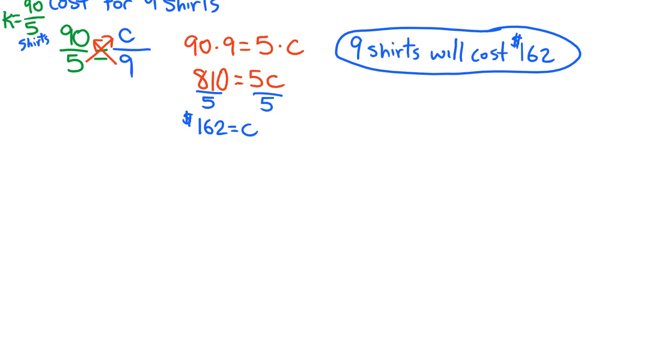So let's use this same example. We're going to start by finding k, which is our constant. So we have y equals kx. Again, let's let the cost be y, and let's let x be the number of shirts. So we know that we paid $90 for 5 shirts. So we can solve this equation, divide both sides by 5, and we get that the constant is $18.